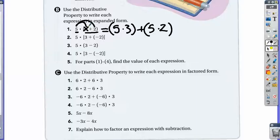First you need to do the rainbows. So it would be from that to that, which equals 5 times 3 plus 5 times negative 2.